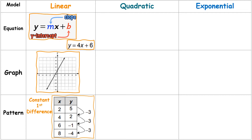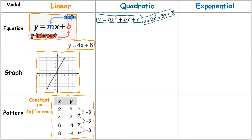For quadratic functions, we have three different forms. Standard form is y equals ax squared plus bx plus c — here's an example in standard form. Vertex form is y equals a times the quantity x minus h, squared, plus k.